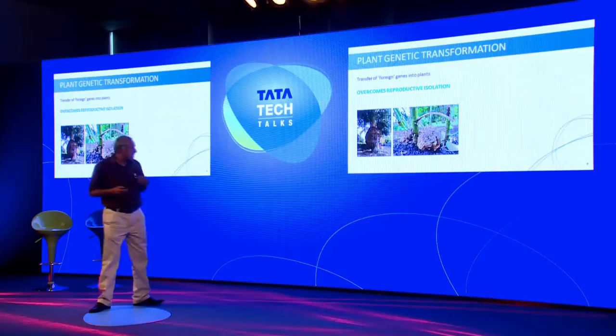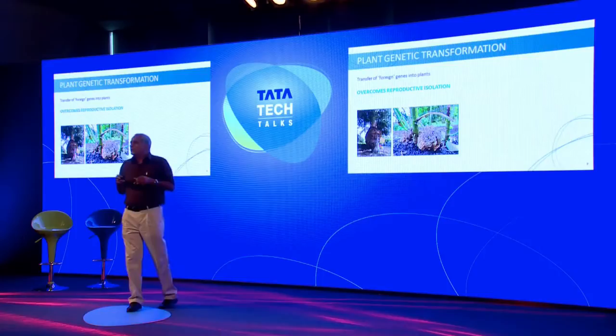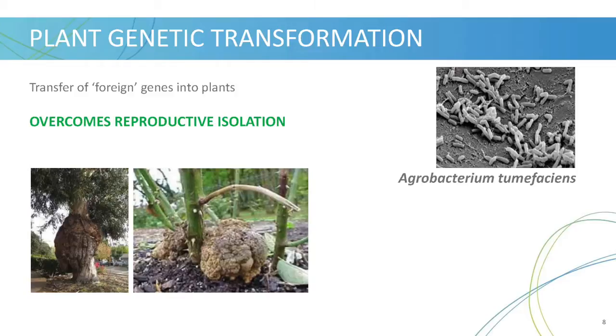We are not playing God — we are observing what is there in nature and fine-tuning it to put it to our use. Crown gall disease is common in the northern hemisphere. More than 100 years ago, it was discovered that this disease is caused by the bacterium Agrobacterium tumefaciens. In the last 50 to 70 years of research, it has come to be known that it actually transfers a piece of its DNA to the plant, which gets integrated with the plant's genes and starts making certain hormones, resulting in tumor formation.